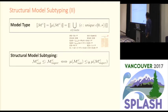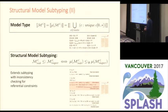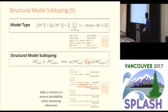We have refined the structural model subtyping: we say that a model type expression is a subtype of another if the type corresponding to the root classes in the first model type expression is a subtype of the type for root class names in the second. We have extended this subtyping relation by adding consistency checking for referential constraints — so a referential constraint can only be strengthened in a subtype — and we add a memory for ensuring decidability when traversing references.